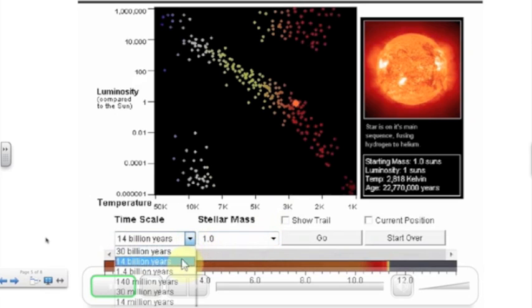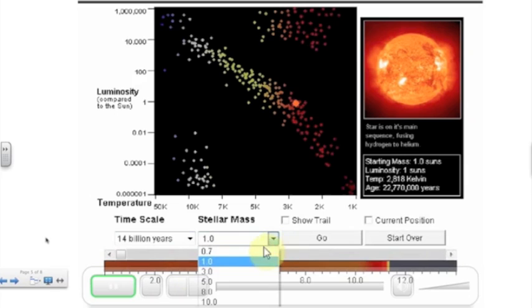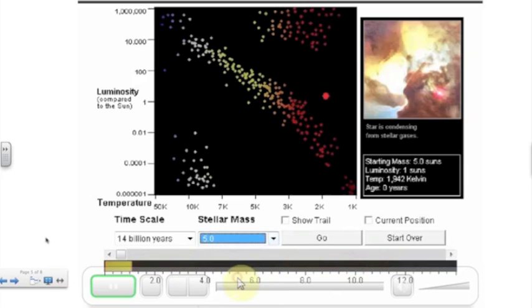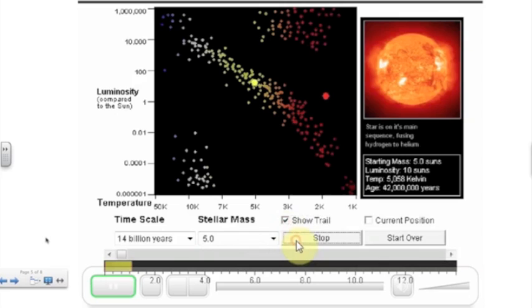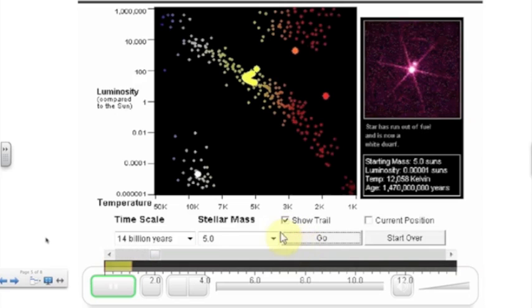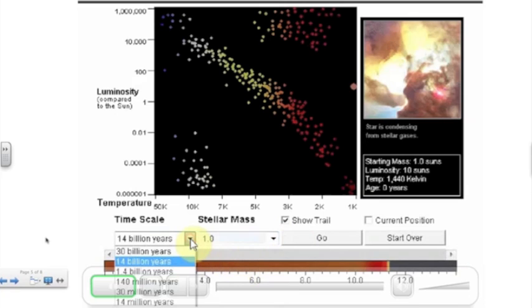In our last lesson we looked at the HR diagram that's what astronomers use to track the evolution of a star. We're going to use a computer simulation today to see how a star moves from one part of the diagram to another part of the diagram. Make sure you've printed out the lab manual page so you can fill in the data table as we go along.